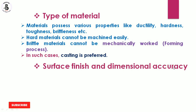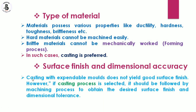The next factor is surface finish and dimensional accuracy. According to the dimensional accuracy requirements as per the shape and size, you need to control that. Casting with expandable molds does not yield good surface finish. Therefore, if casting is selected, it should be followed by a machining process to obtain the desired surface finish and dimensional tolerance. Secondary machining operations are required after casting to improve surface finish and dimensional accuracy.